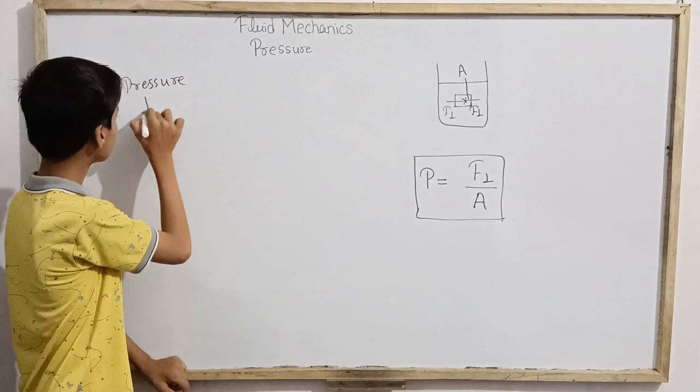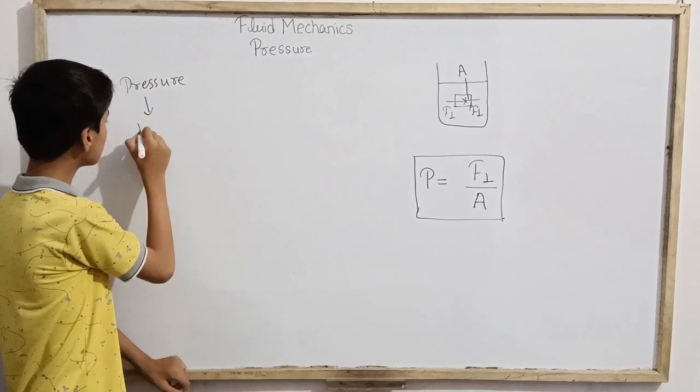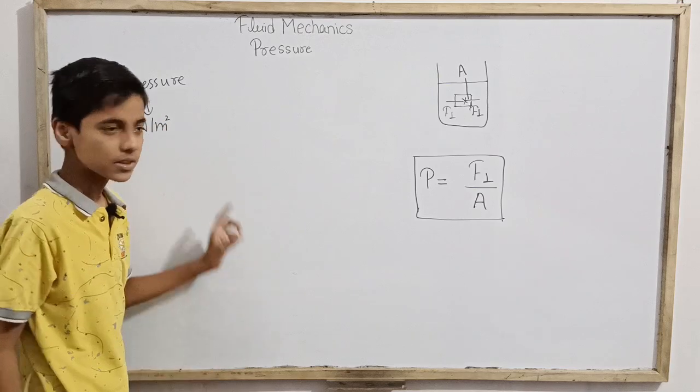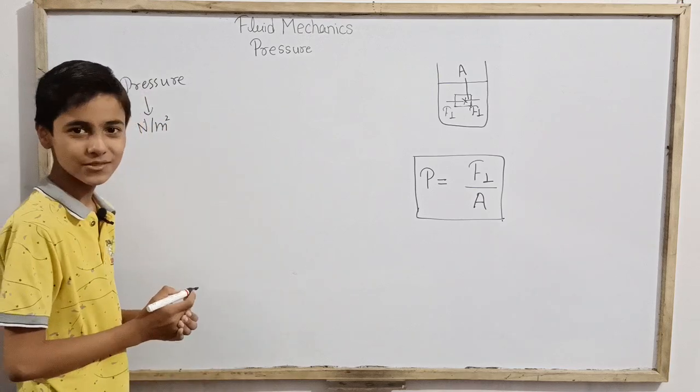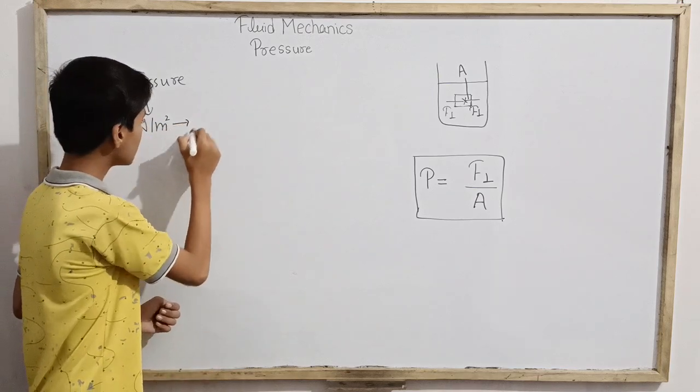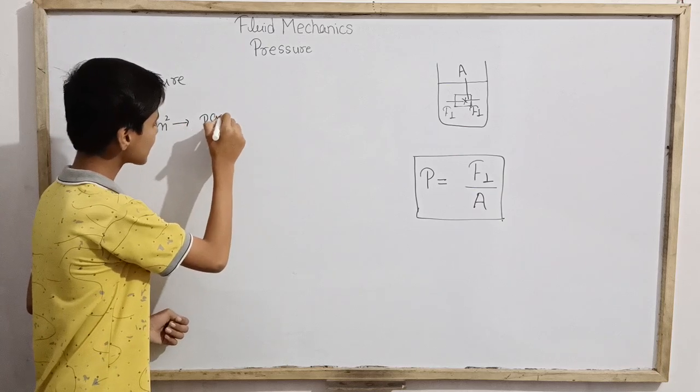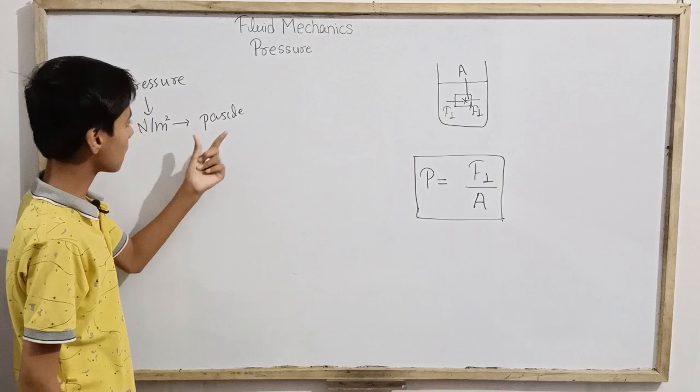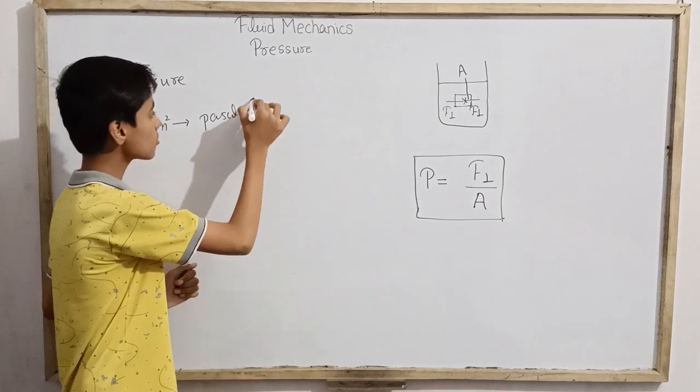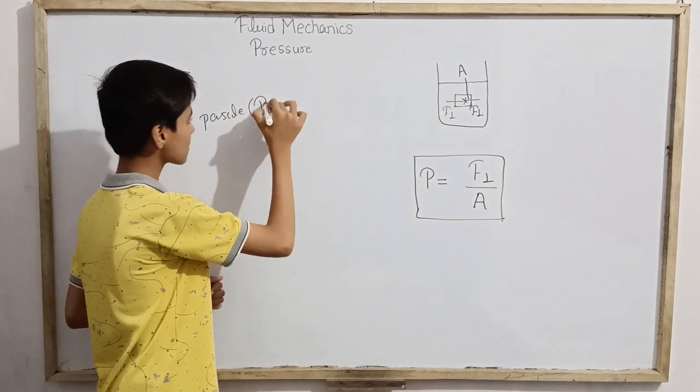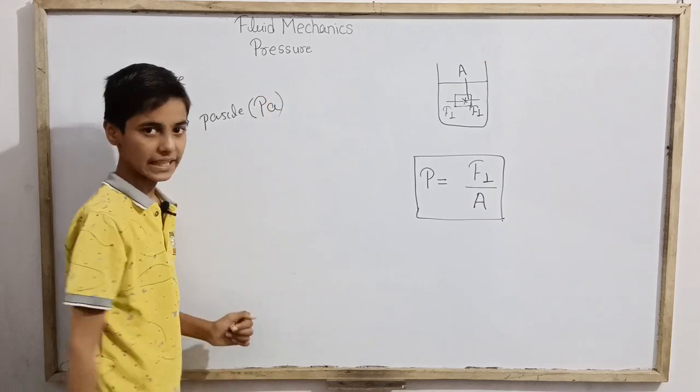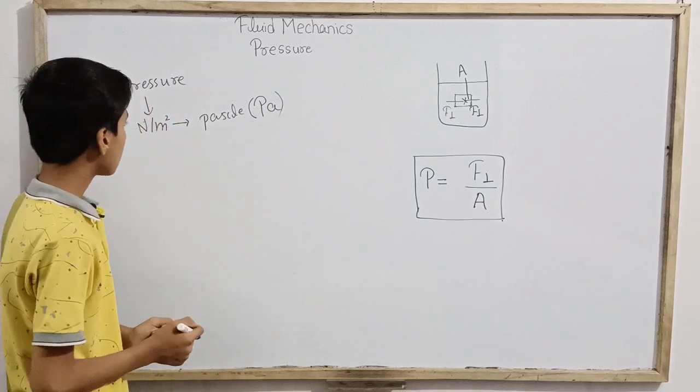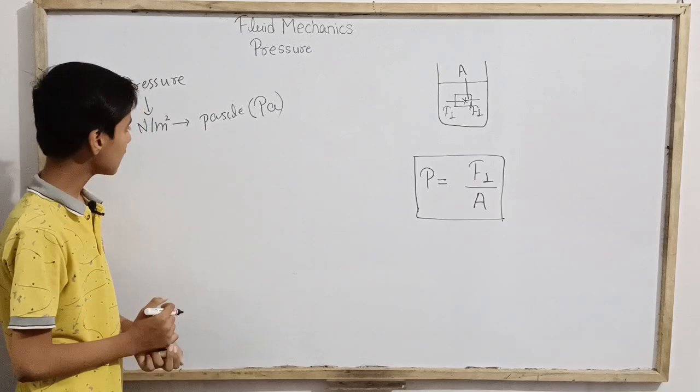Pressure is measured in newton per meter square or newton per square meter, which we also call Pascal. Its name is Pascal, named after a very great scientist. In short form we write capital Pa. Here we will use capital Pa for the unit and small p for the variable.